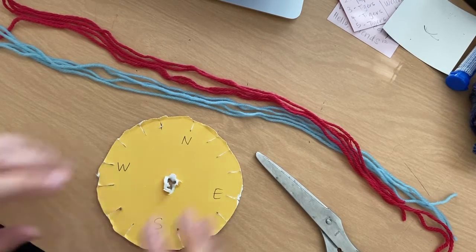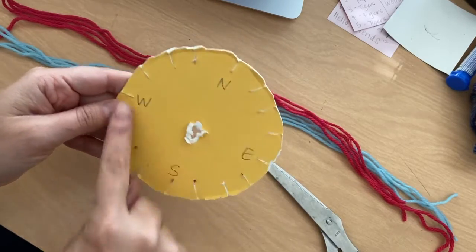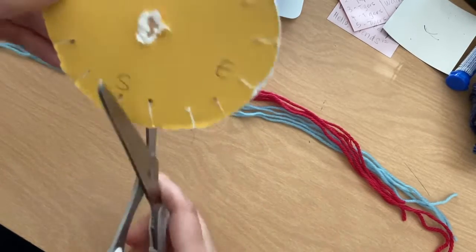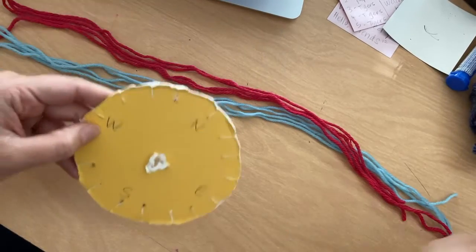I'm going to show you how to set up your little loom for cord weaving. The first thing is to make sure that your circle is cut out. You need to make sure that all of these little notches are cut out and there is a hole in the middle.